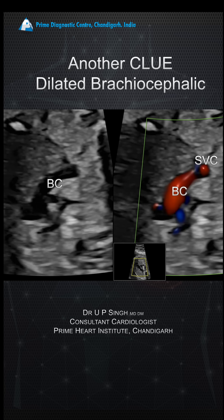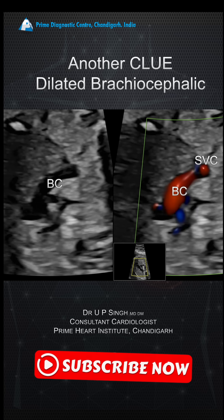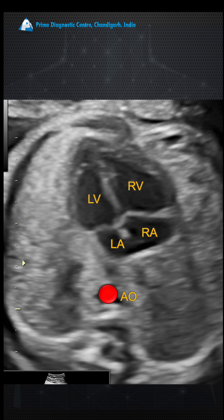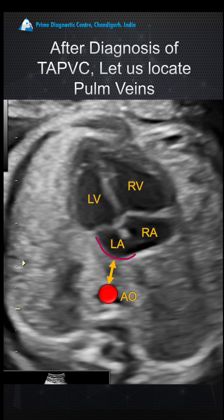So if you have these two findings, it's a great clue. In the four-chamber view, you see the distance between the aorta and the left atrial posterior wall is increased — so much so that you could place another aorta there. And you see a smooth-walled left atrium with no pulmonary vein entering it. This is the diagnosis of Total Anomalous Pulmonary Venous Connection (TAPVC). But it's not going to end here — we need to find out where the pulmonary veins are going.